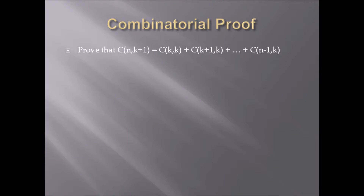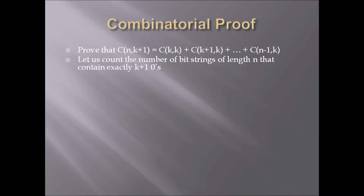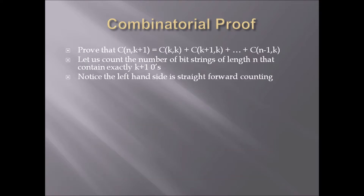Let's work another one. Prove that C(n, k+1) equals C(k,k) + C(k+1,k) + ... + C(n-1, k). This one's a little more difficult, but we're going to use bit strings again. Let us count the number of bit strings of length n that contain exactly k+1 zeros. Bit strings are a good go-to set when you see a choose function, and the left-hand side already counts this directly, so the left-hand side is straightforward.